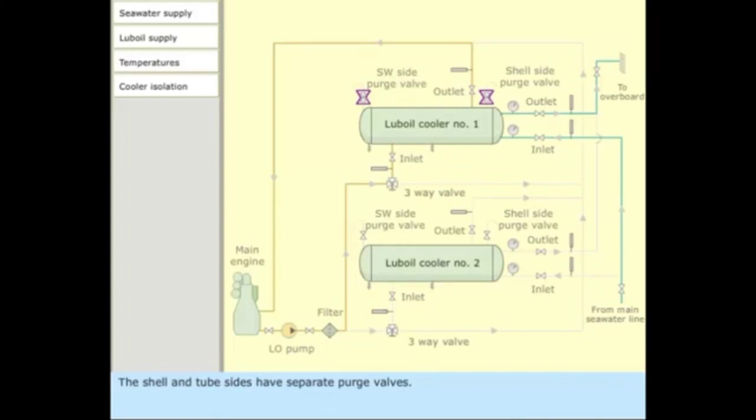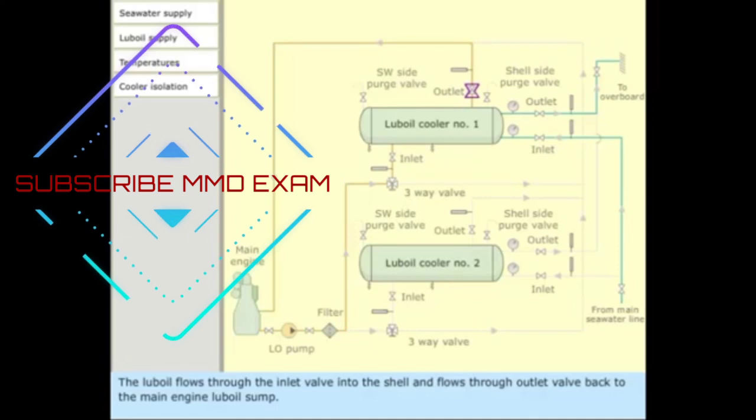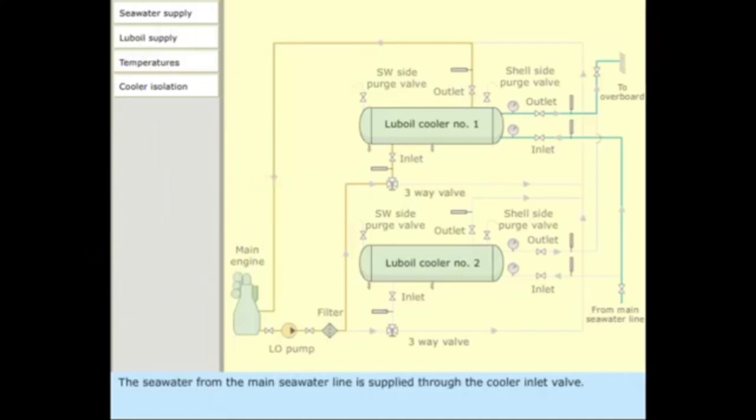The shell and tube sides have separate purge valves. The lube oil flows through the inlet valve into the shell and flows through the outlet valve back to the main engine lube oil sump. The sea water from the main sea water line is supplied through the cooler inlet valve. The water flows through the sea water outlet valve to overboard.